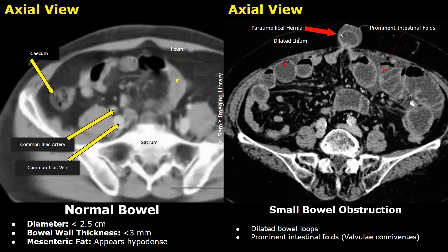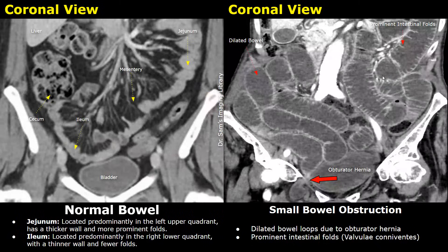This hernia is the cause of small bowel obstruction — the bowel loops are dilated and have prominent intestinal folds. This obstruction was due to an obturator hernia. There is protrusion of the intestine through a defect in the obturator canal; the intestine is present in the hernia sac, and this hernia was the cause of small bowel obstruction in this patient.